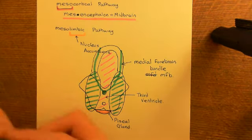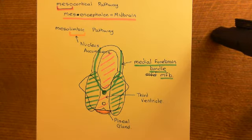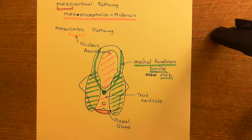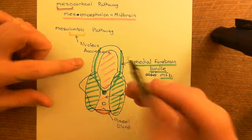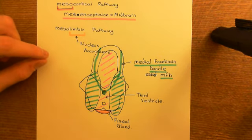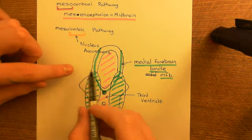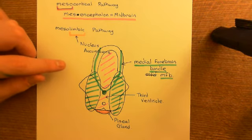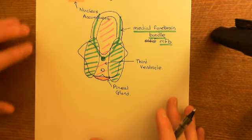You have two medial forebrain bundles — a left MFB and a right MFB. The dopaminergic axons running in the medial forebrain bundle are going to be delivered to both the cortex and the nucleus accumbens, via the mesocortical pathway and the mesolimbic pathway respectively. First we'll see how these neurons get to the cortex in the mesocortical pathway, and then we'll discuss where the nucleus accumbens is and cover the mesolimbic pathway.